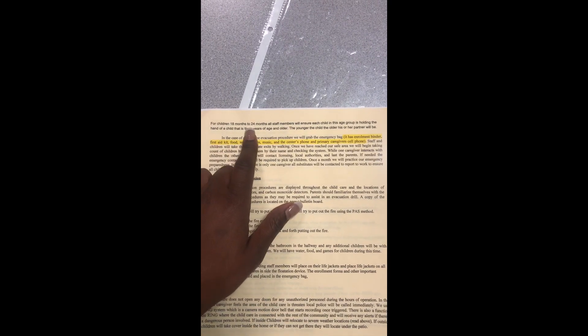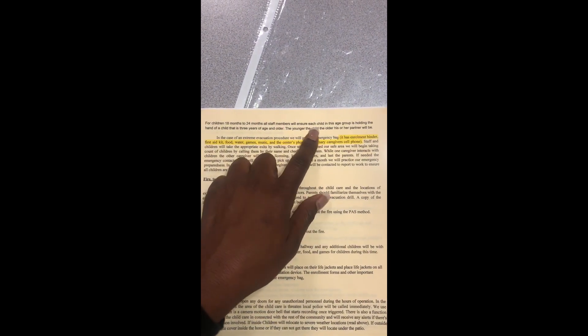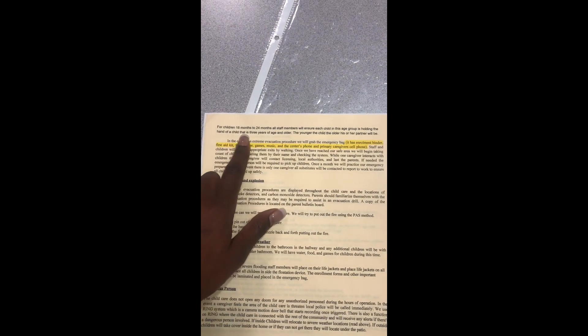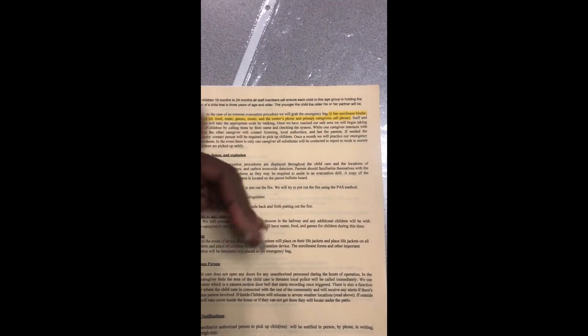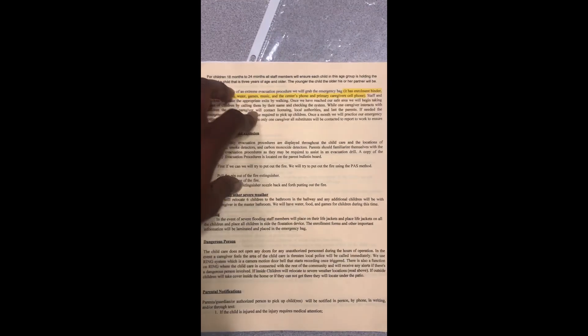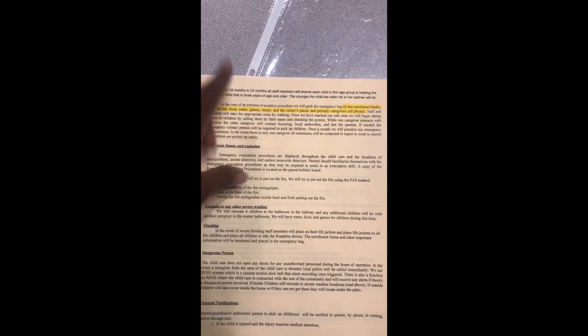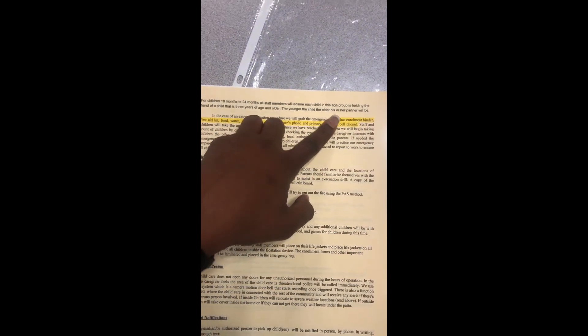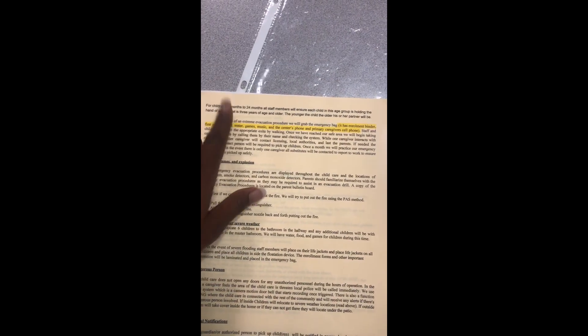And then the second part, it just breaks down for children 18 months to 24 months. All staff members will ensure each child in this group is holding the hand of a child that is three years of age and older. Now, my home childcare, we screen our children greatly. Number one, they have to be 18 months and walking before they can be with us. And even though it says three year old, you're probably thinking that's not mature enough, but our three year olds that we have are very mature because they really started with us at 18 months. So they're very mature. The younger the child, the older his or her partner will be. So if a child is 18 months, they will be paired up with like a six year old. Now granted, it's me and another staff member. I do have a staff member, my best friend. She works with me.